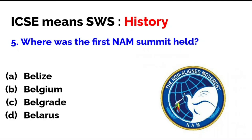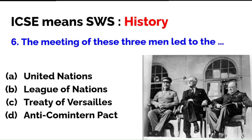Where was the first NAM summit held? This is the emblem used at one of the NAM summits, generally symbolizing peace. The options are Belize, Belgium, Belgrade, or Belarus. The correct answer is C — Belgrade, in 1961.